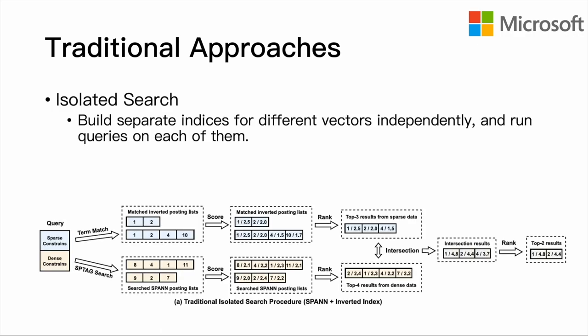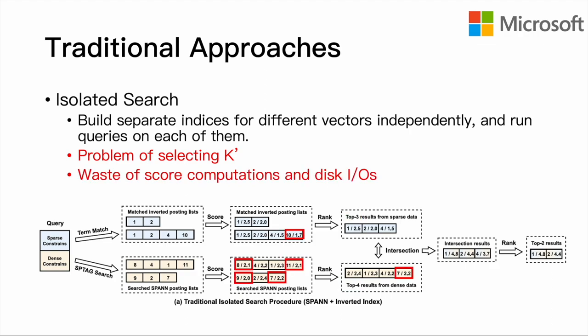They build separate indices for different vectors and run queries on each of them. However, it is difficult to determine the number of candidates that each index needs to return — more leads to long latency, while fewer leads to low accuracy. Besides, intersection can only be done after all isolated indices complete their individual top-k searches, resulting in a waste of computations and IOs.